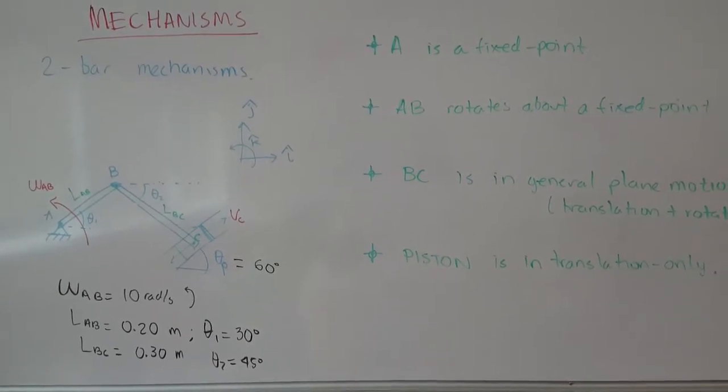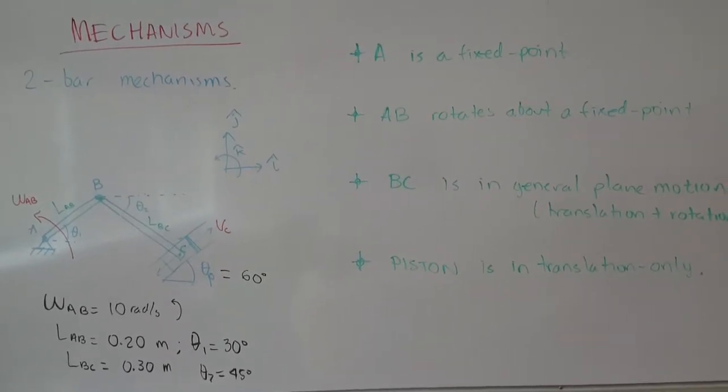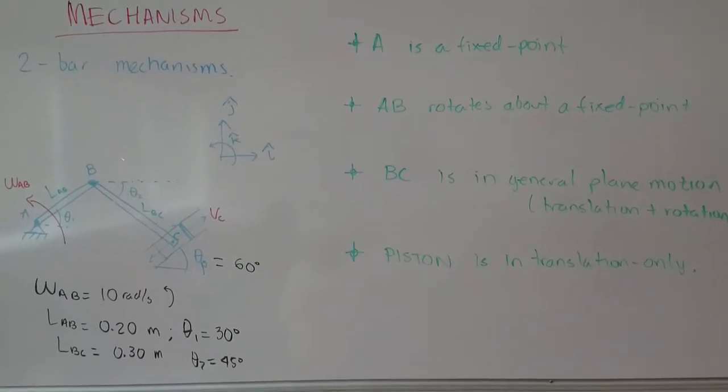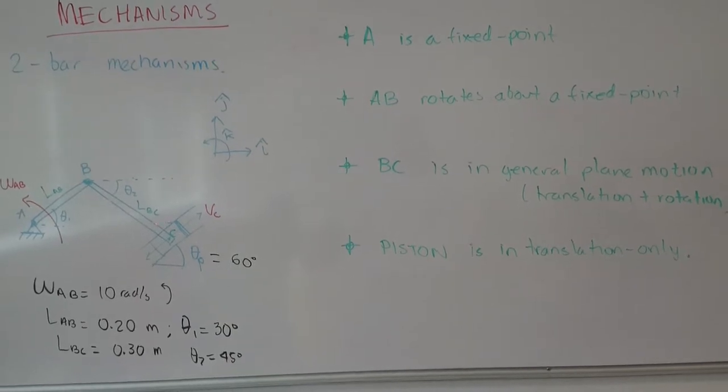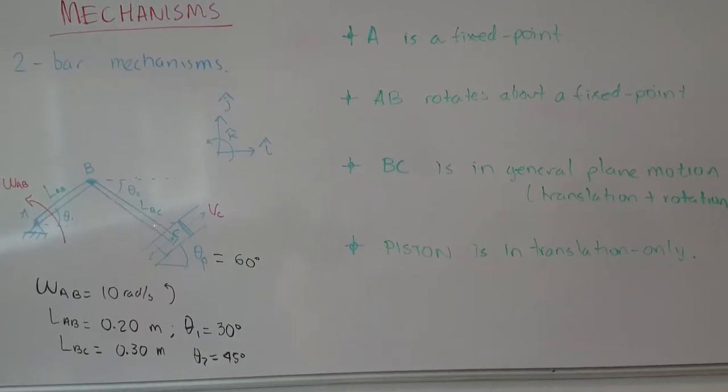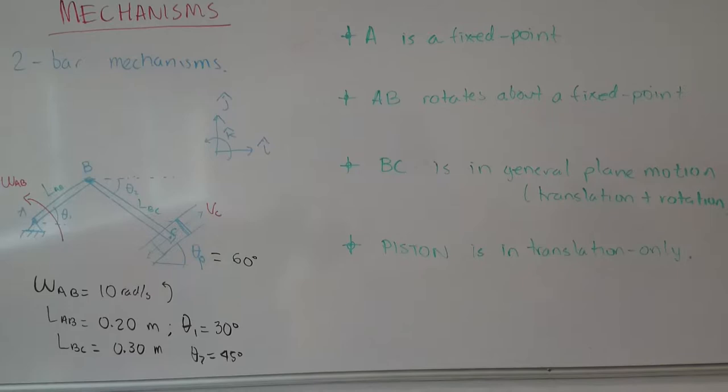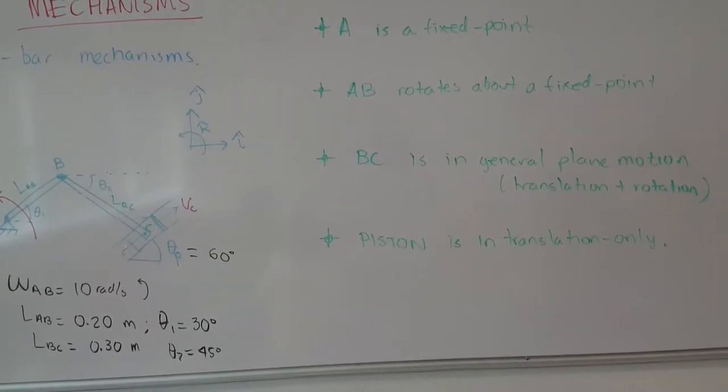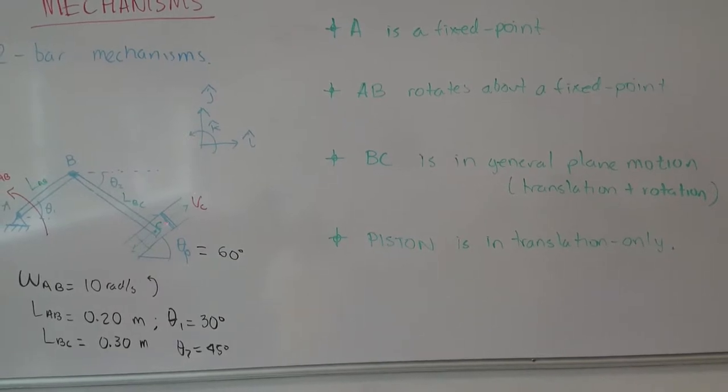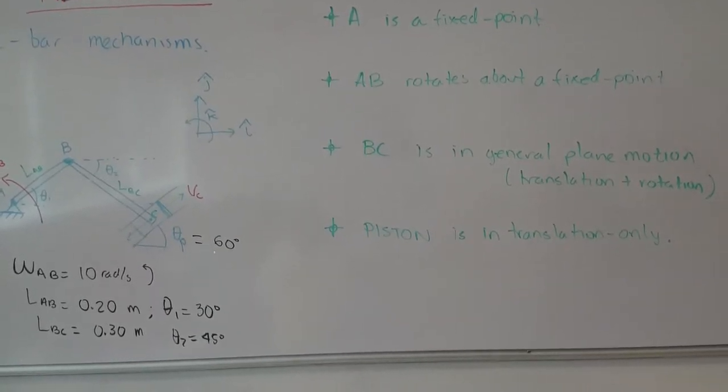Therefore, we should be able to find velocity of B. Bar BC, on the other hand, is having general plane motion because it's got a component of translation and also rotation. And finally, the piston C is just translating along this inclined plane defined by an angle theta P.